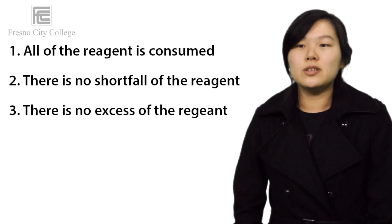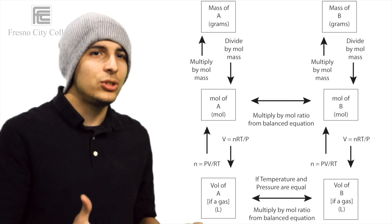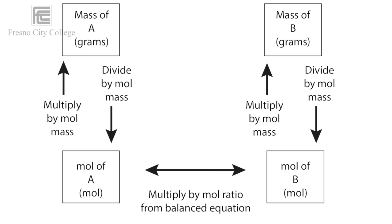Gas stoichiometry deals with gas-related reactions, where the gases are at known temperatures, pressures, and volumes, and can be assumed to be ideal gases. For gases, the volume ratio is ideally the same by the ideal gas law, but the mass ratio of a single reaction has to be calculated from the mole ratio of the products and reactants.